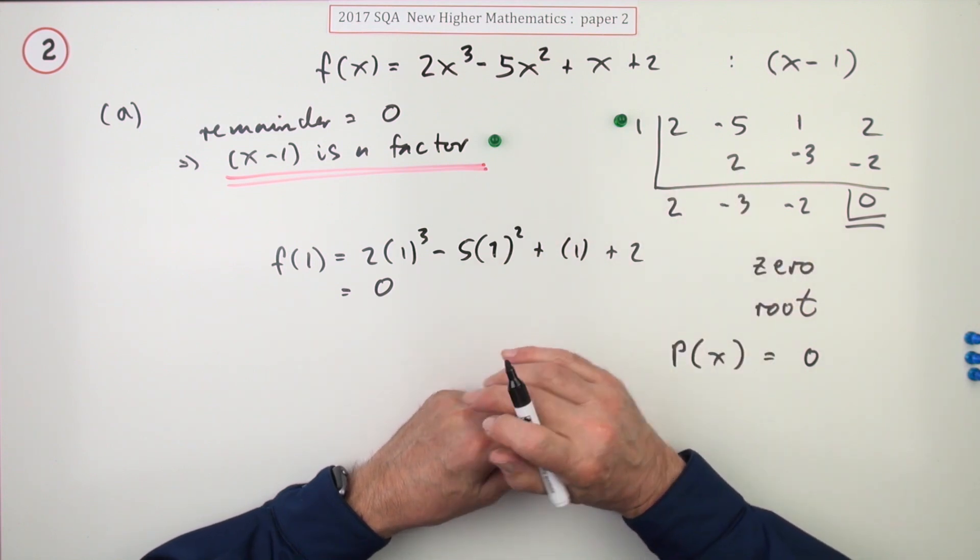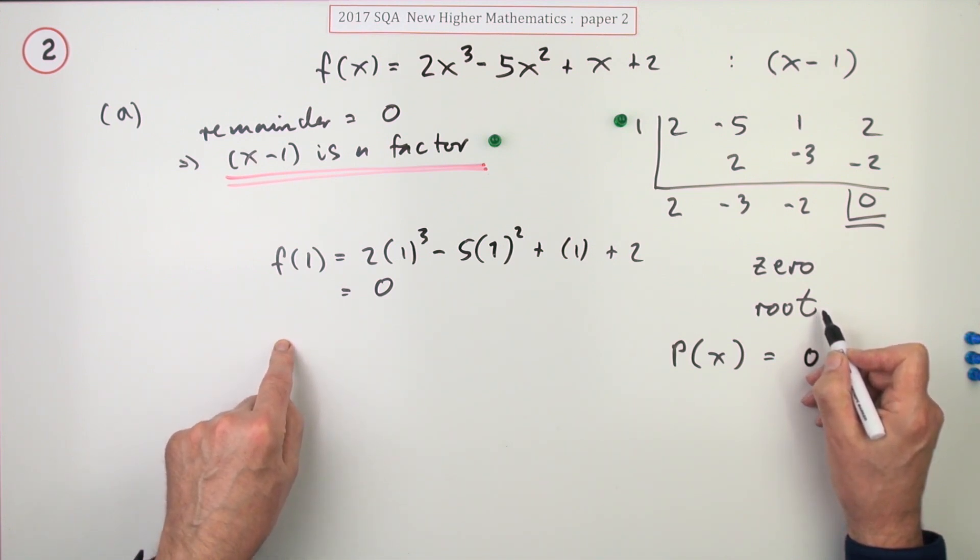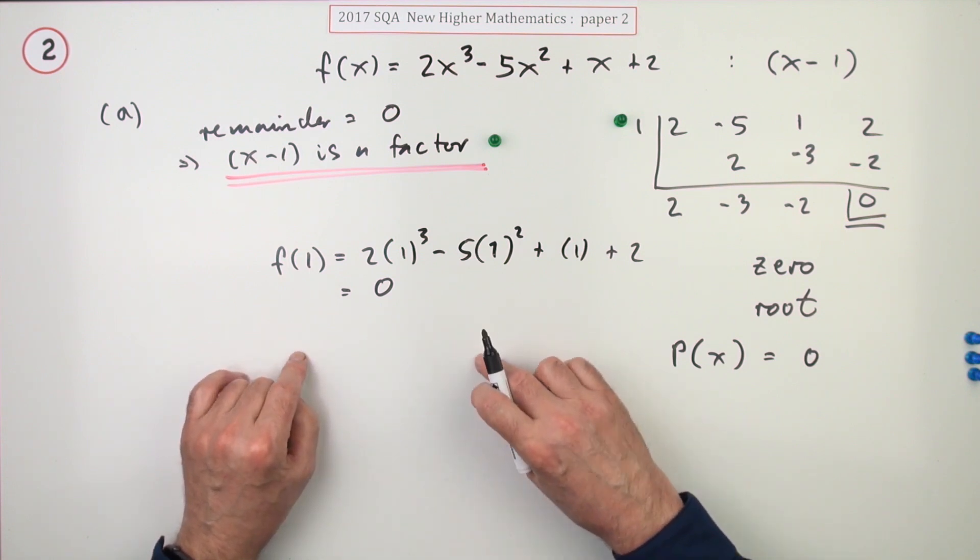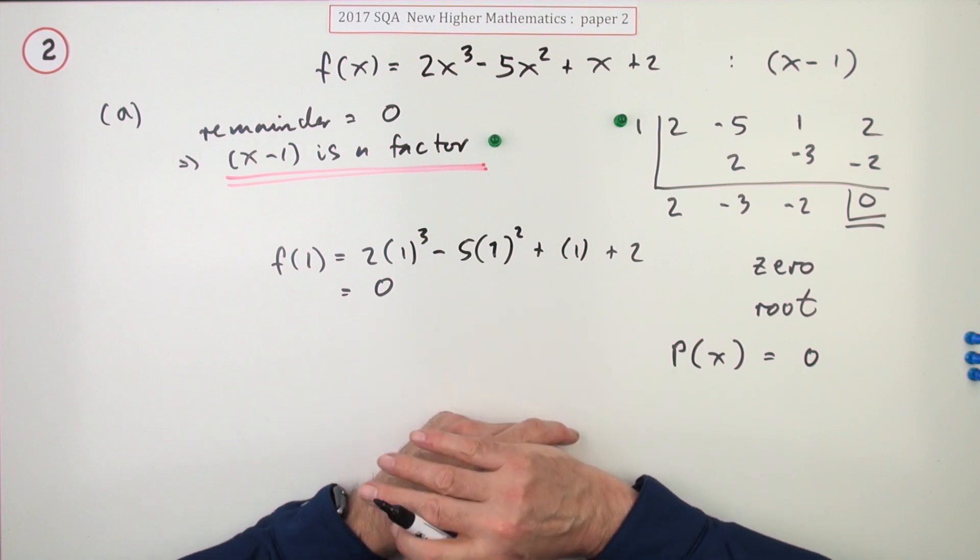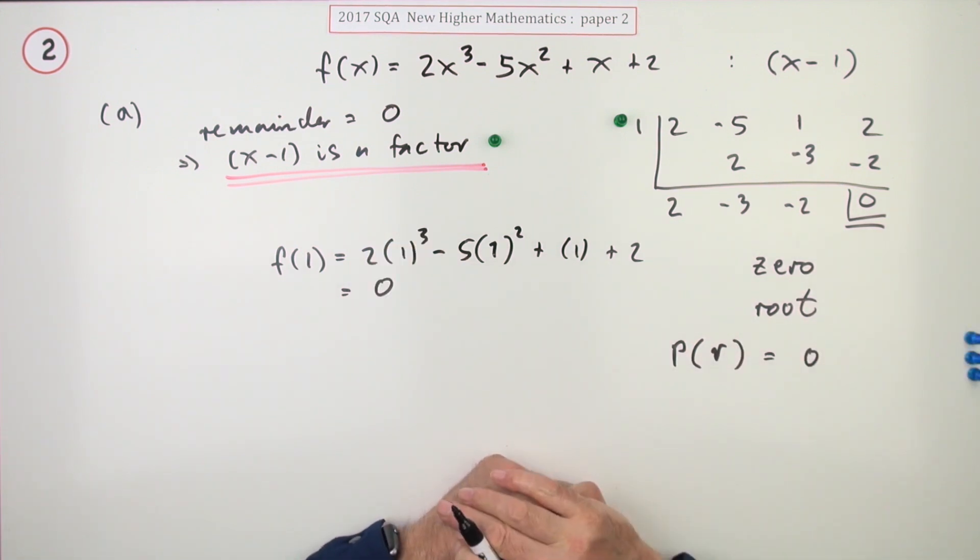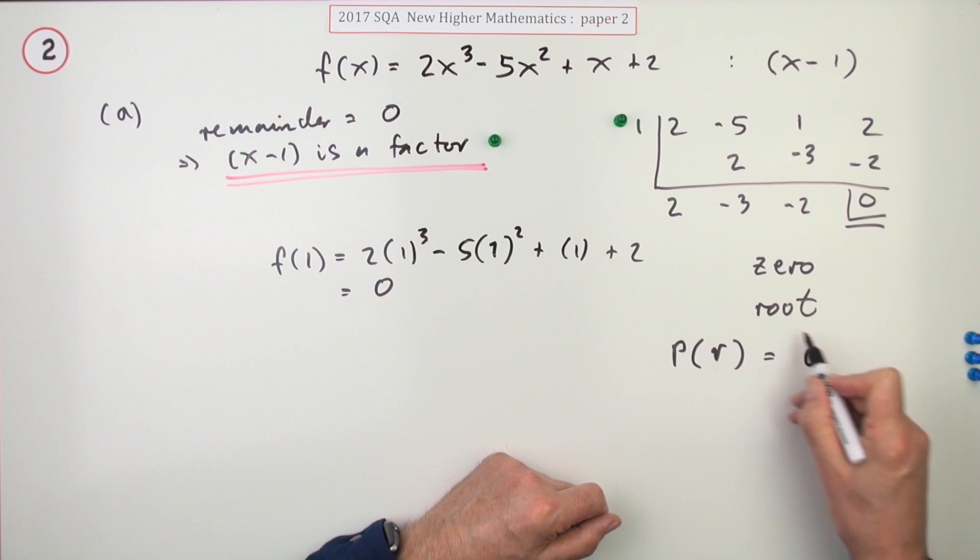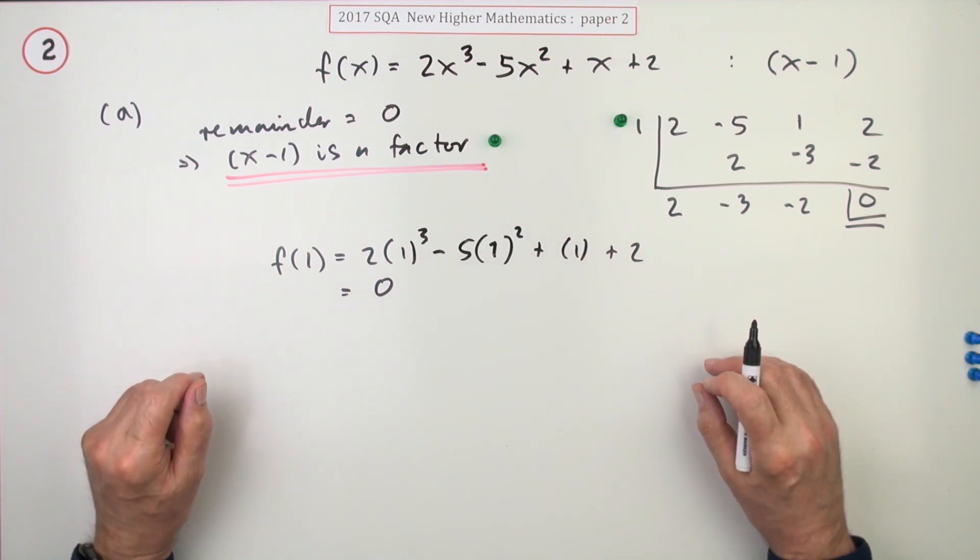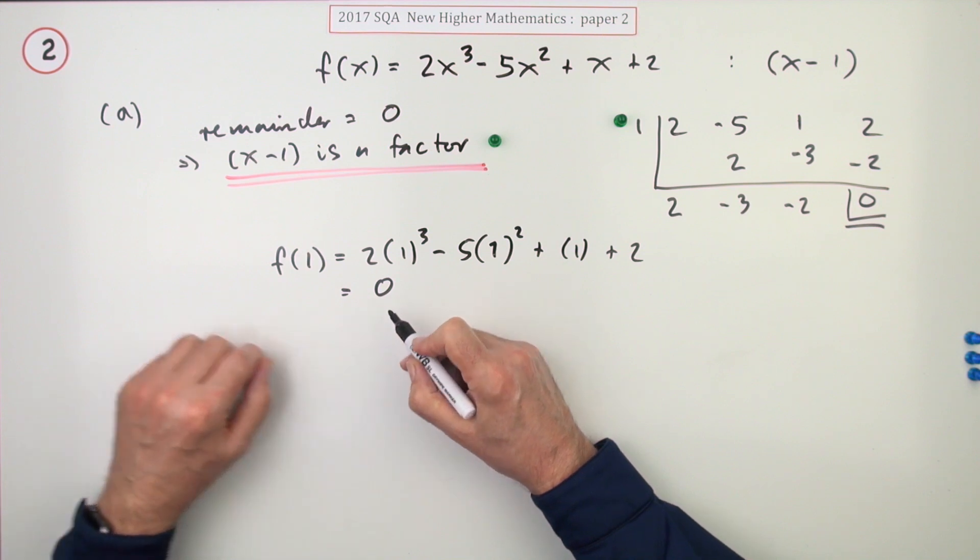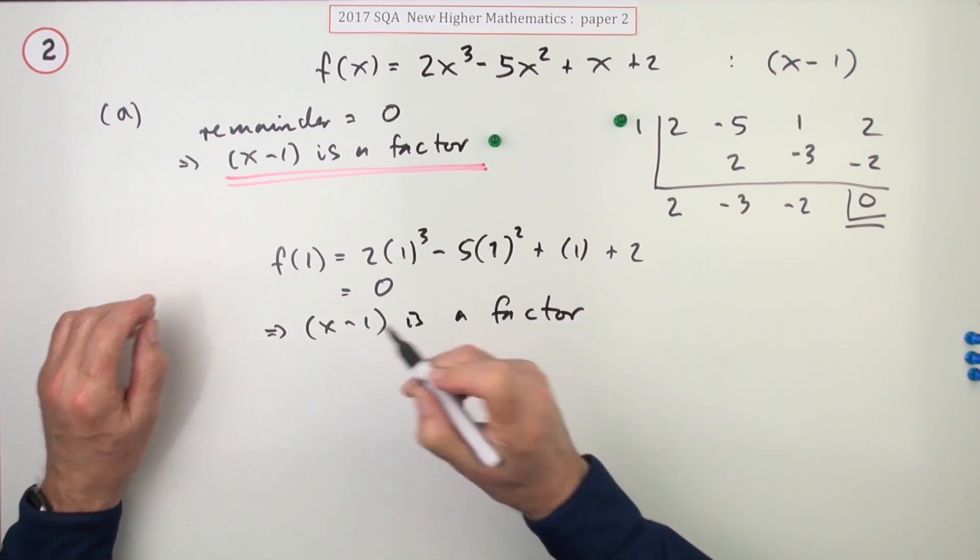In the marking scheme, it said something about do not give a mark if you use the word root. I'm not sure if in this part here, if you say 1 is a root on its own, you won't get the second mark. Or if you just say 1 is a root and not then say that means it's a factor, you don't get the second mark. I'm not clear about what that is, whether they're forbidding you. It's a bit pedantic if they do, to use the word root. Because how can you tell the difference? Is that a zero because you've put that number into it and got the answer 0? Or is that a root because when you solve the equation, it gives the answer 0?